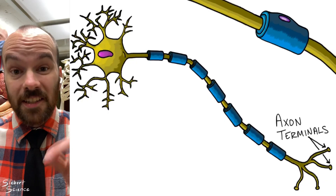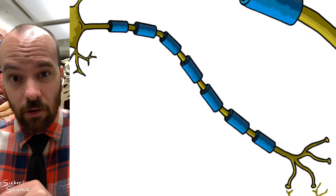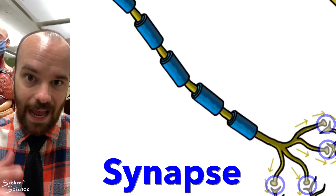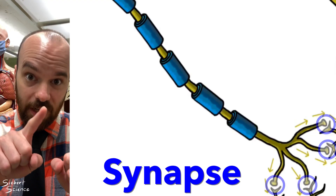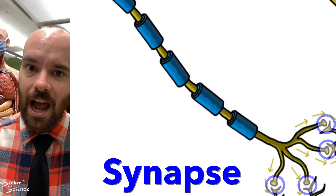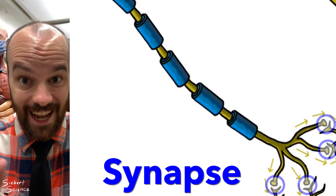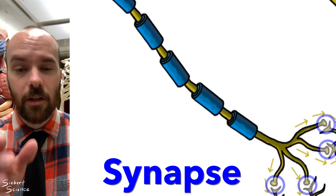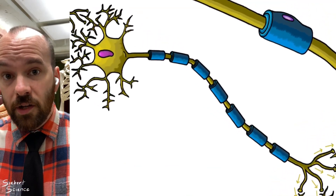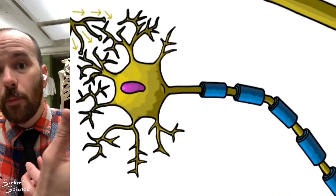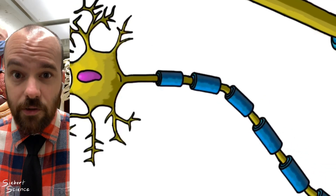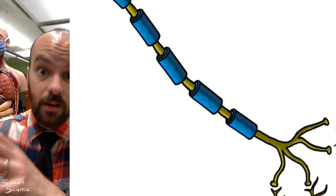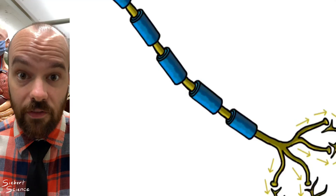A terminal is just an ending — like an airport terminal where you leave and board the plane. At the axon terminal, the signal essentially leaves the axon and goes to another neuron so it can be sent even farther. This connection where the axon terminals of one neuron meet the dendrites of another is called a synapse. There's a small gap called the synaptic cleft where that signal gets transferred from one neuron to the next.